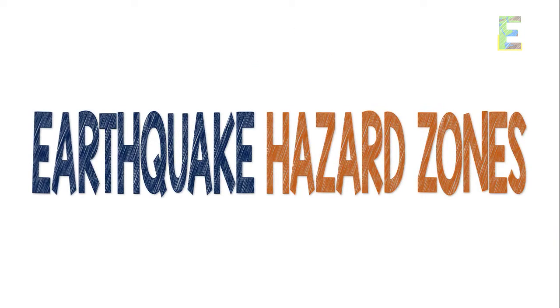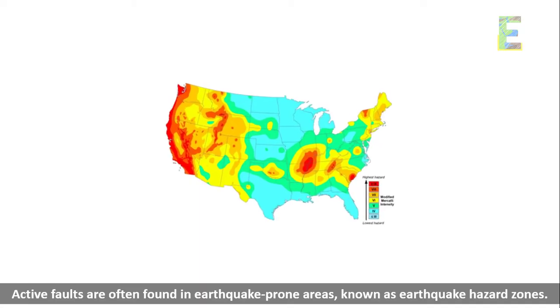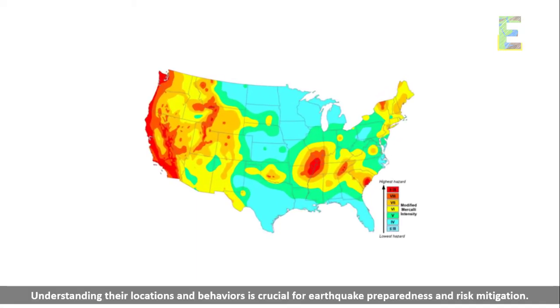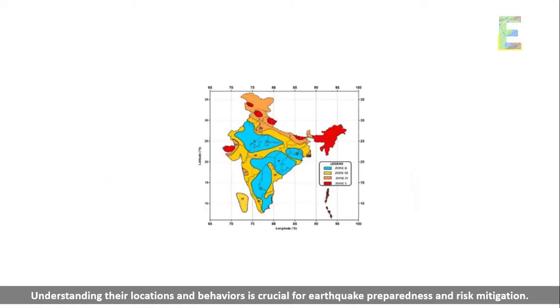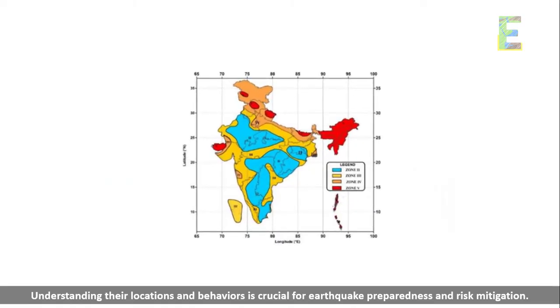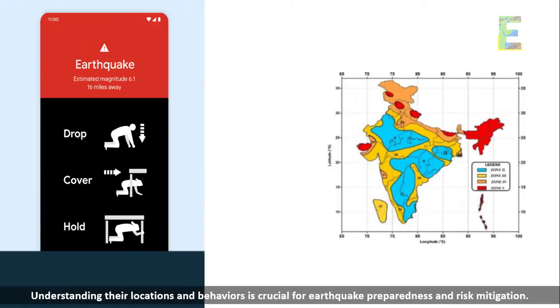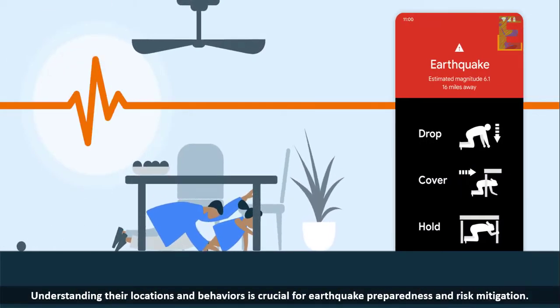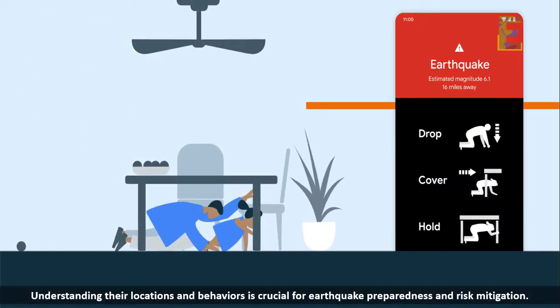Earthquake Hazard Zones. Active faults are often found in earthquake-prone areas, known as earthquake hazard zones. Understanding their locations and behaviors is crucial for earthquake preparedness and risk mitigation.